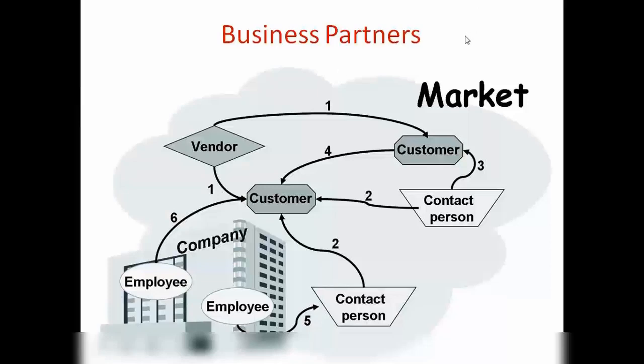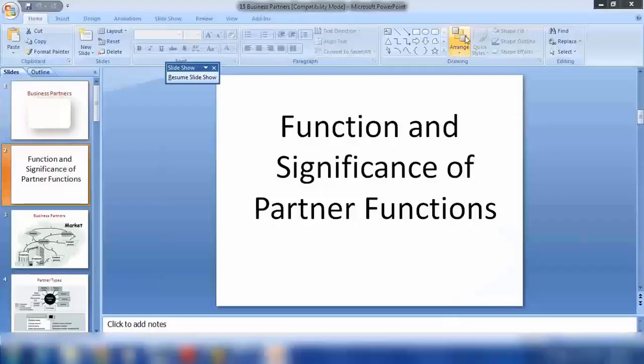We have different types of business partners. A customer could be a vendor or could be a contact person. Here we're looking at sold-to party and ship-to party, but we can have something else as well.